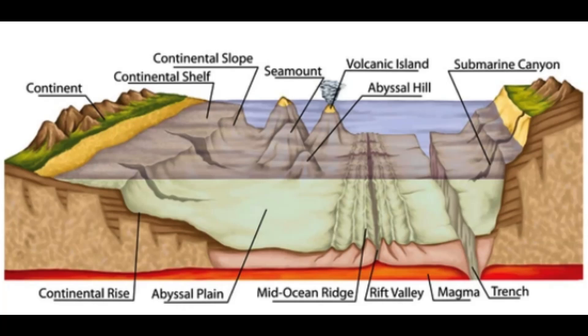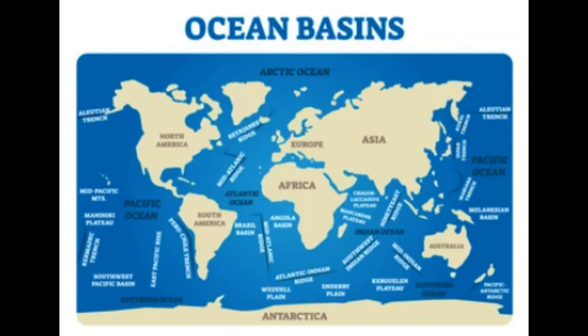The Indian Ocean Basin is the third-largest ocean basin and is situated between Africa to the west, Asia to the north, Australia to the east, and Antarctica to the south. It is connected to the Atlantic Ocean through the southernmost tip of Africa and to the Pacific Ocean through the Indonesian archipelago. The Indian Ocean Basin is renowned for its diverse marine ecosystems, including coral reefs, seagrass meadows, and mangrove forests. It also contains several notable features like the Chagas-Lakadive Ridge and the 90 East Ridge.